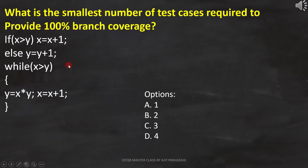Here, the question is, what is the smallest number of test cases required to provide 100% branch coverage? And then these options are provided.